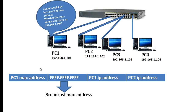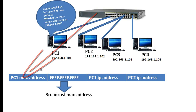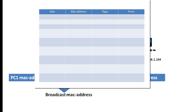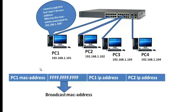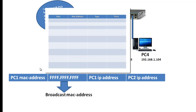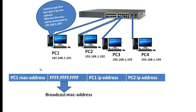When the switch receives the frame, it will first look at PC1's MAC address. The switch will check what we call the MAC address table — that's where the switch stores the MAC addresses learned on the network. The switch will check its MAC address table to see if it has an entry for PC1's MAC address. Since the switch doesn't have any entry in its table, it will add PC1's MAC address to its table, along with the port where the MAC address came from.